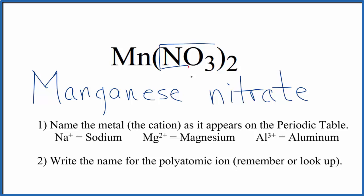We know that the nitrate, the whole thing, is one minus. This is a really good one to remember. And we have two nitrate ions. Two times one minus, that's two minus. The manganese has to be two plus. So we're going to put a roman numeral two with parentheses between the names.